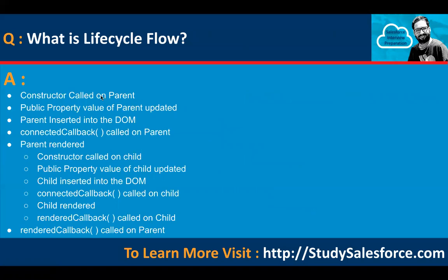What is the lifecycle flow in a parent-child relationship? First, the parent constructor is called, then the public property value of the parent is updated, then the parent is inserted into the DOM, then connectedCallback is called on the parent, then the parent is rendered. Next, the constructor is called on the child, the child's public property is updated, the child is inserted into the DOM, connectedCallback is called on the child, the child is rendered, then renderedCallback is called on the child, and finally renderedCallback is called on the parent.